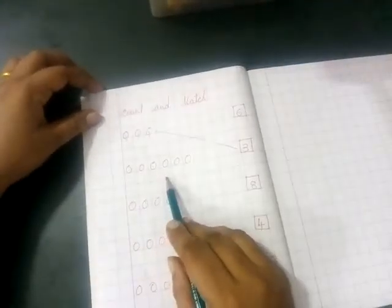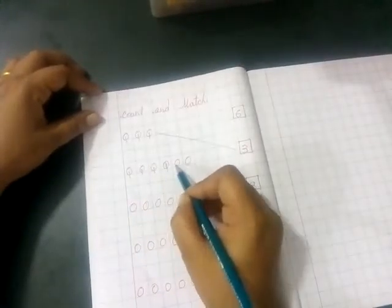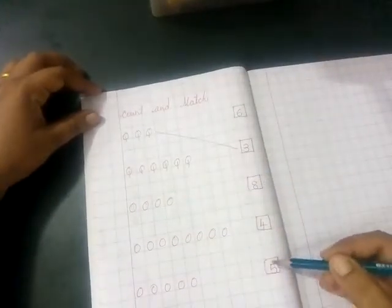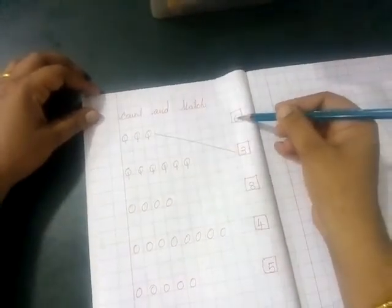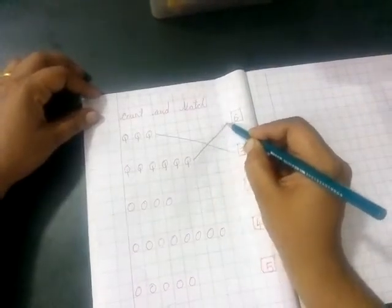Now, let's count this one. 1, 2, 3, 4, 5, 6. Where is number 6? Yes. So, match these balls to number 6.